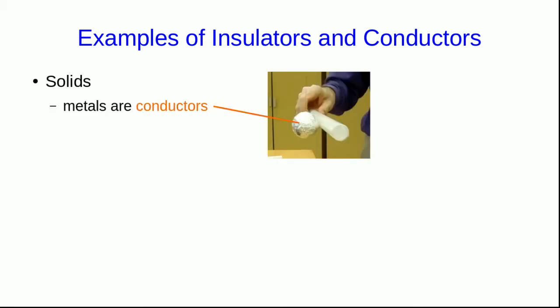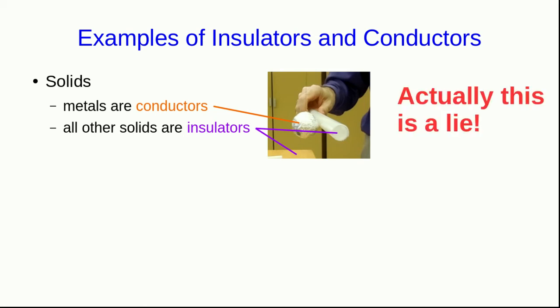Whether an object is an insulator or a conductor is a property of the materials it's made out of. Among solids, metals are conductors, such as the aluminum in the aluminum foil covering the ping pong ball. All other solids are insulators. Well, actually, that's kind of a lie. Pretty much all metals are good conductors to one extent or another, and there are a few non-metallic solids that are conductors, but for the most part all other solids are insulators, at least at room temperature.